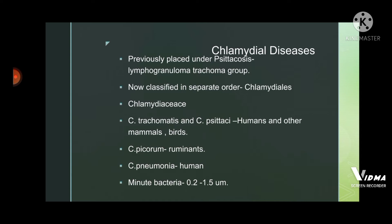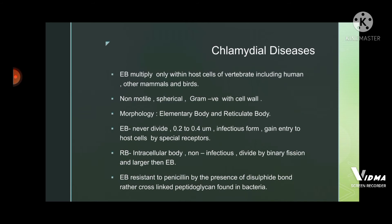Chlamydia trachomatis causes trachomatosis; Chlamydia psittaci causes psittacosis in humans, other mammals, and birds; Chlamydia pecorum affects ruminants; and Chlamydia pneumoniae affects humans. These are minute bacteria ranging from 0.2 to 1.5 micrometers. The elementary body multiplies within the host cells of vertebrates including humans, other mammals, and birds. They are non-motile, spherical, gram-negative with a cell wall.